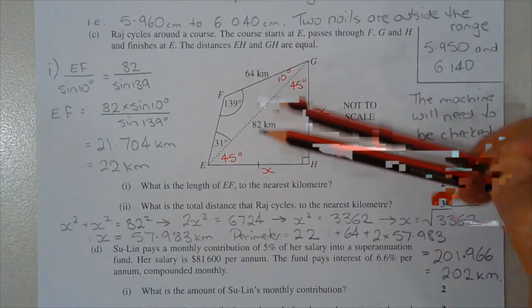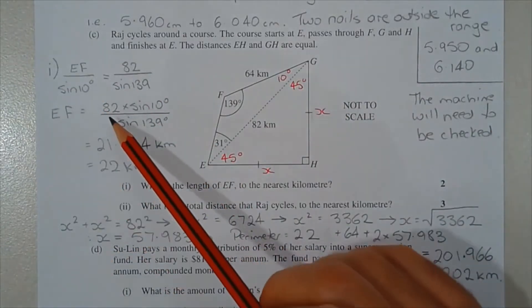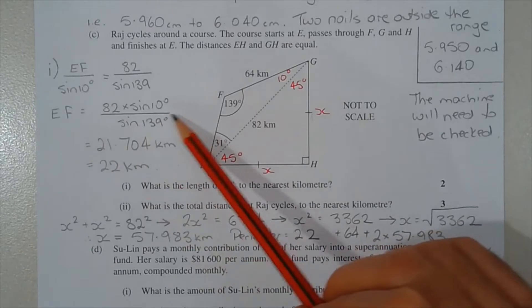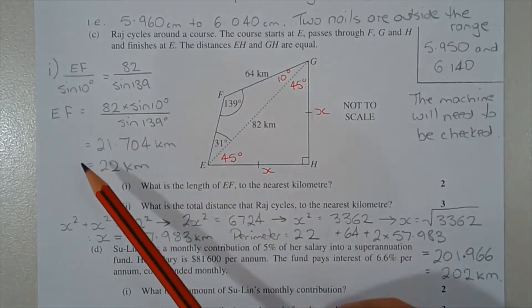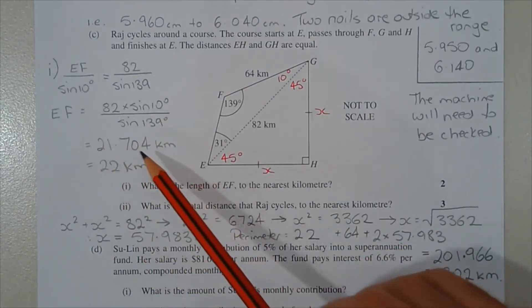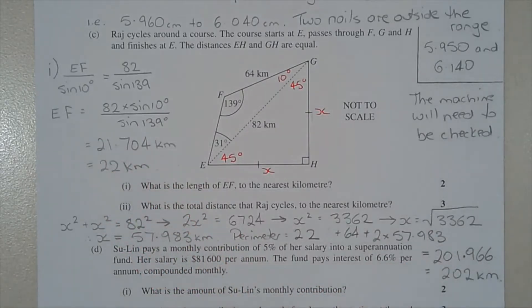Making EF the subject: EF = 82 × sin10° / sin139°, which equals 21.704 kilometres. Rounded to the nearest kilometre, EF equals 22 kilometres.